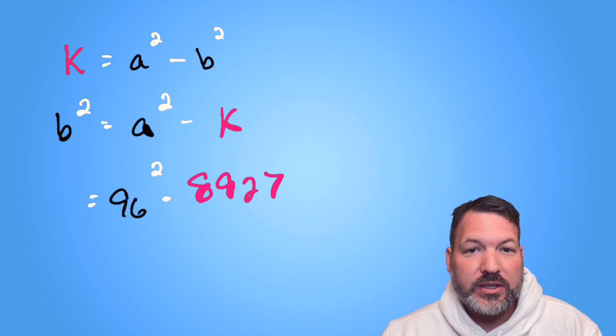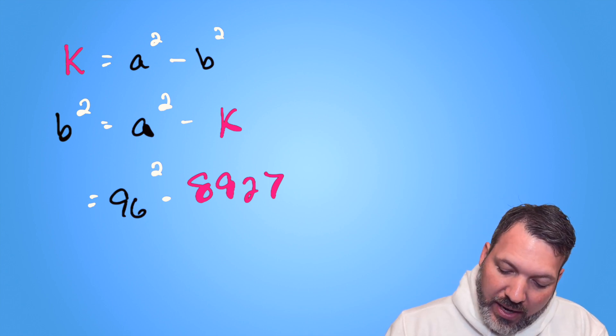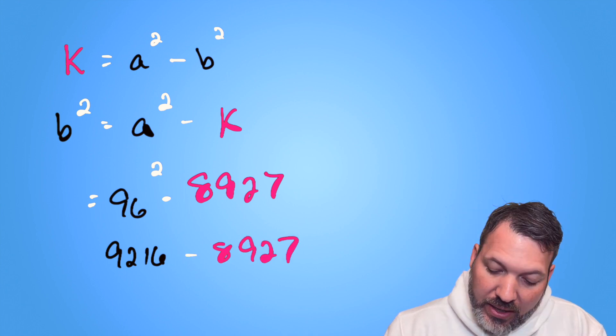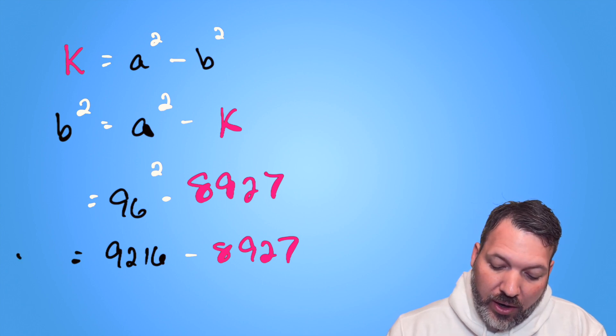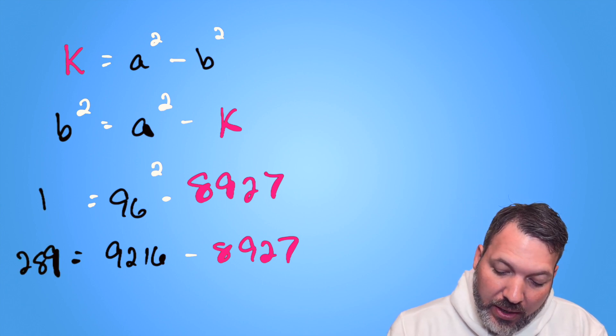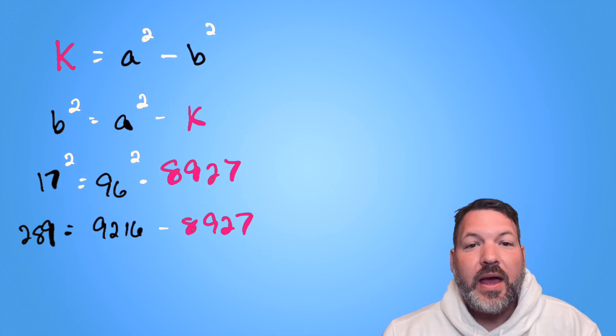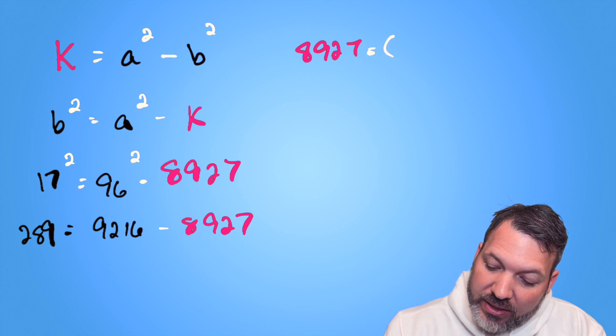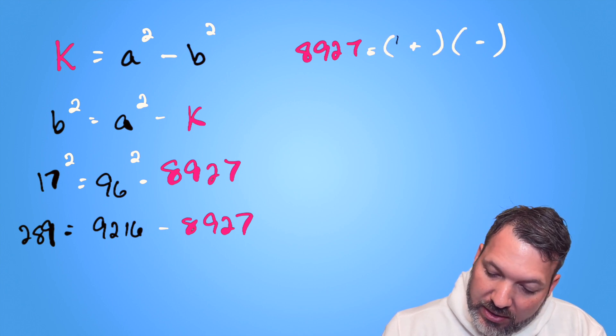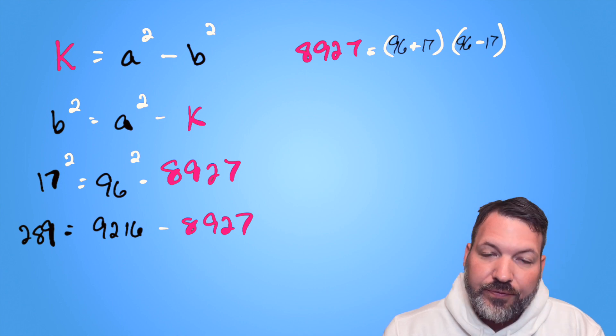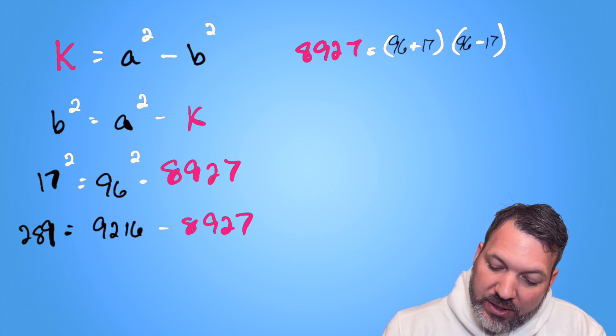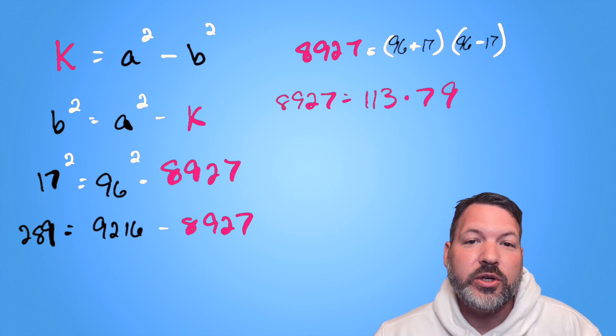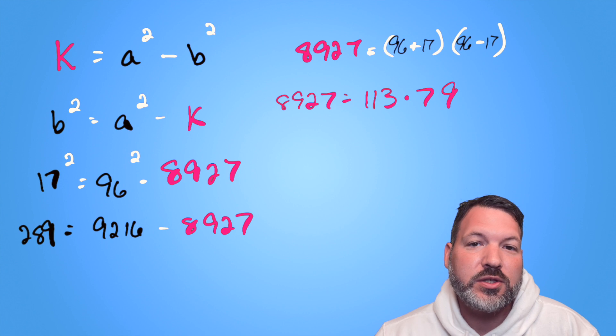96 squared is 9,216. 9,216 minus 8927 is indeed the perfect square 289, which happens to be 17 squared. That means we can go back to the original way that we were writing these difference of squares factors. And we can say that 8927 is the same thing as the sum 96 plus 17 and the difference 96 minus 17. That is, of course, 8927 is the same thing as 113 times 79, which are indeed those two factors we started off the video with.